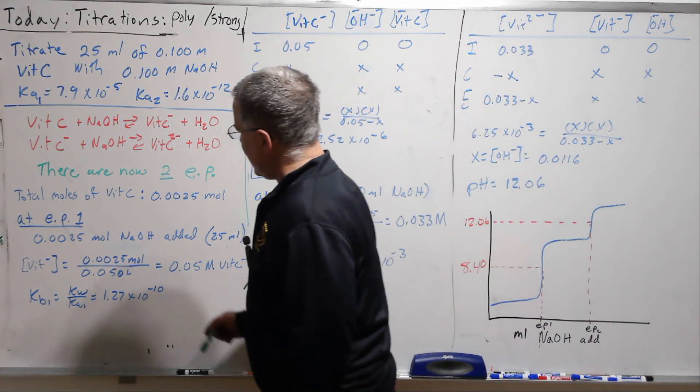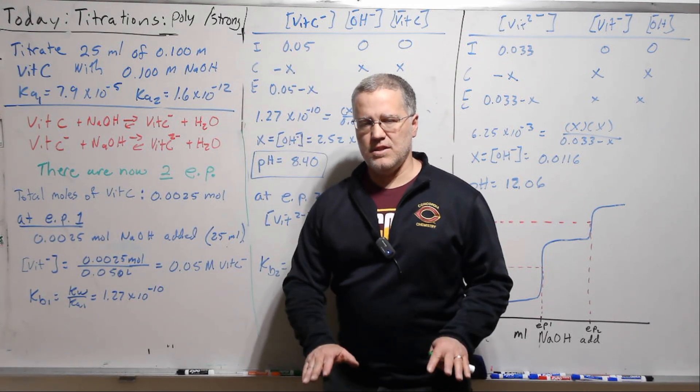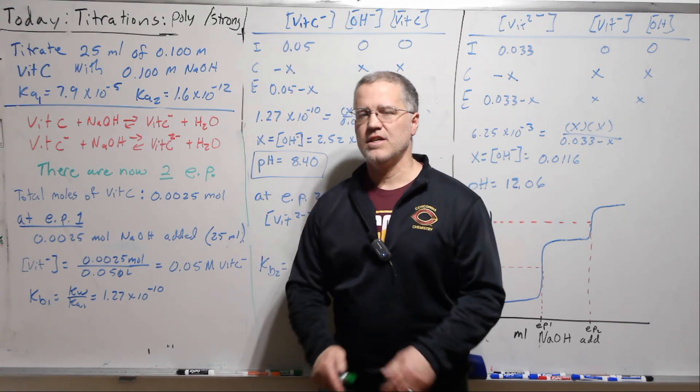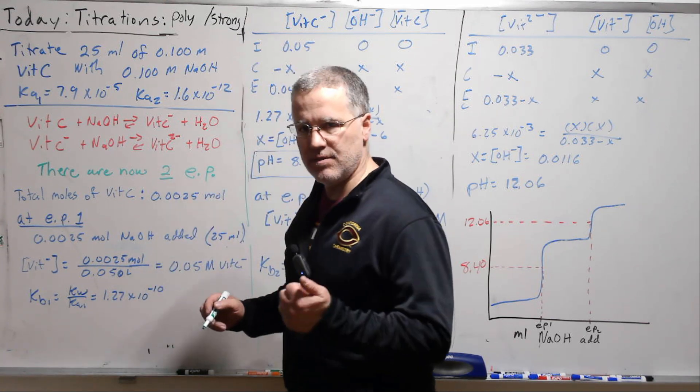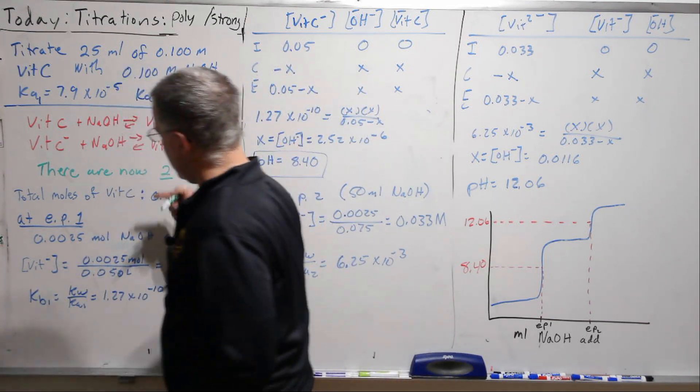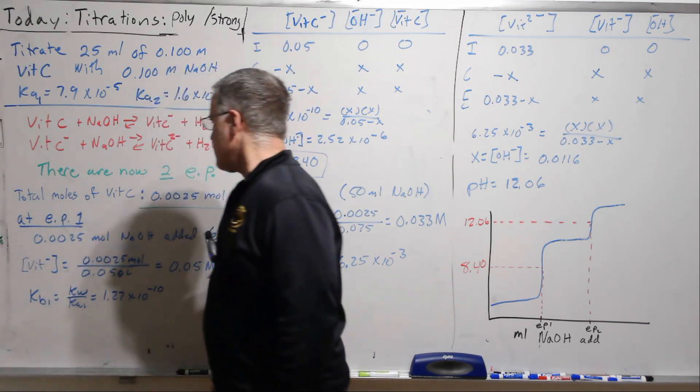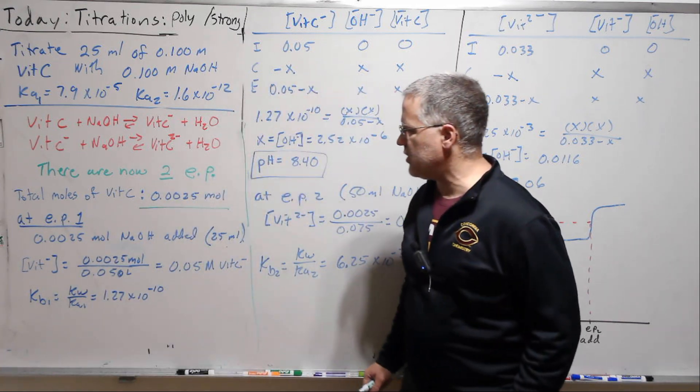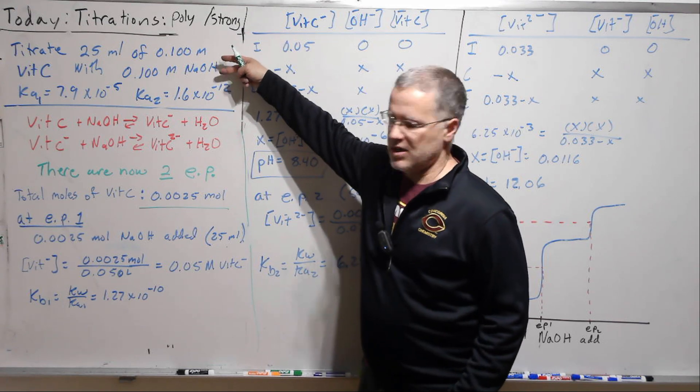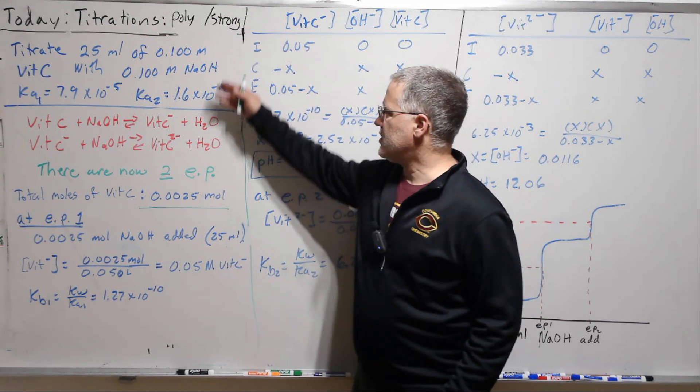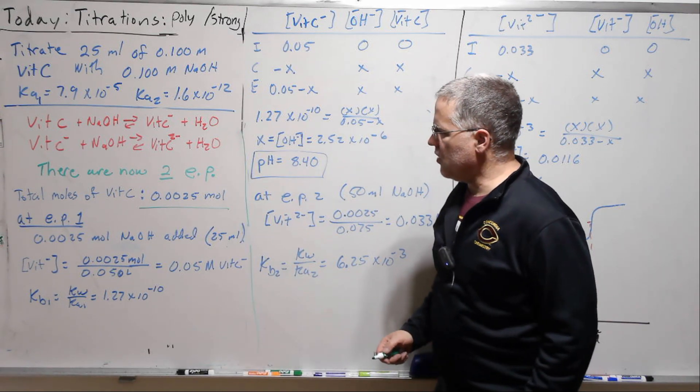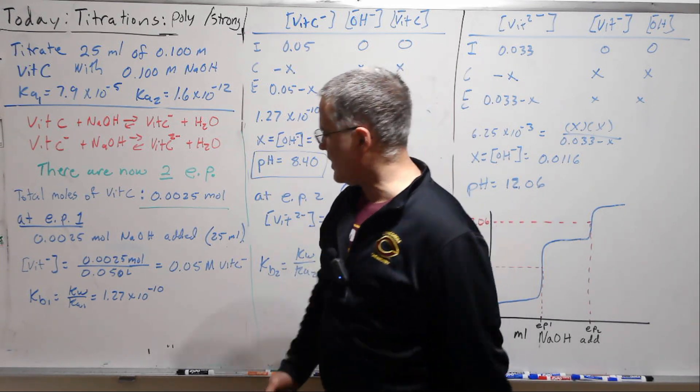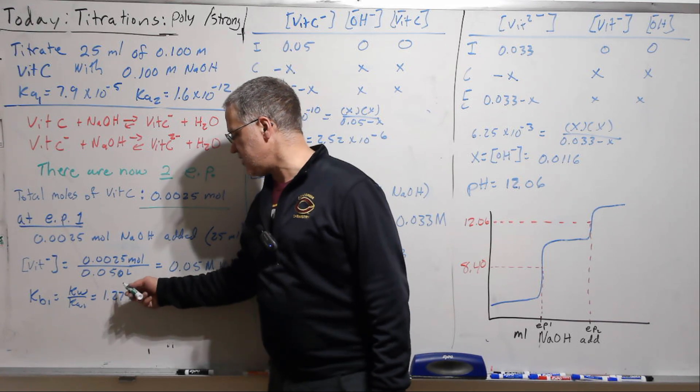All right, so again, I'm going to eliminate some steps here. Make sure you felt really comfortable with the previous lecture and go back and watch that video if you lose it along the way here at all. So our first job: let's figure out the total number of moles of vitamin C. At the first equivalent point, we'll have added exactly that many moles of sodium hydroxide. And because of our choice here, it happens to be 25 milliliters. If this was something else, we'd have to figure out what volume that was.